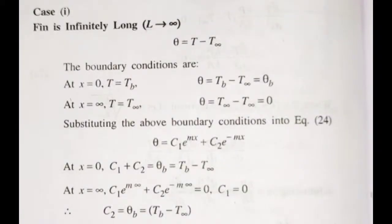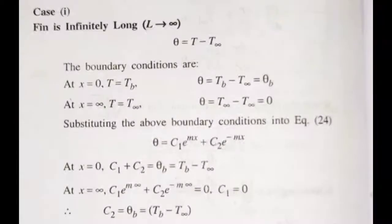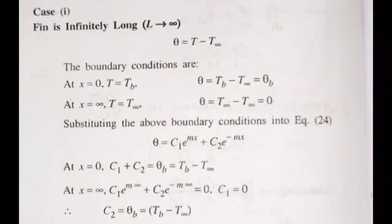Case 1: Fin is infinitely long — L tends to infinity. Boundary conditions: at x = 0, T = T_b, so θ = θ_b = T_b − T∞; at x = infinity, T = T∞, so θ = 0.